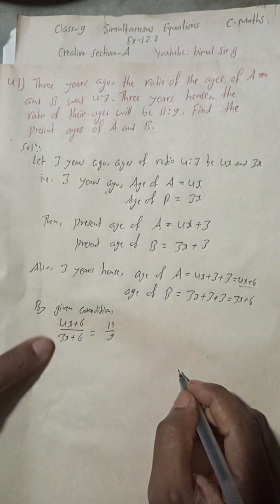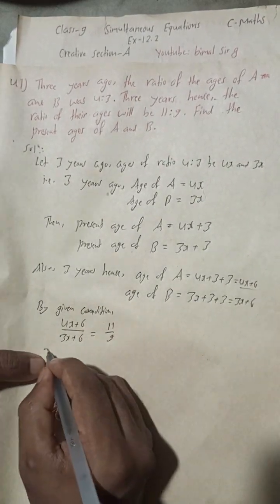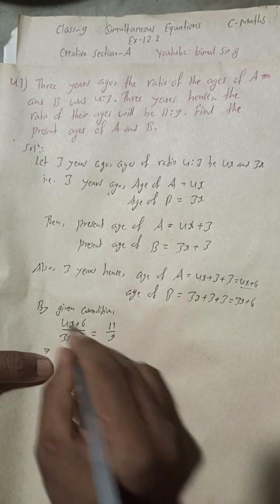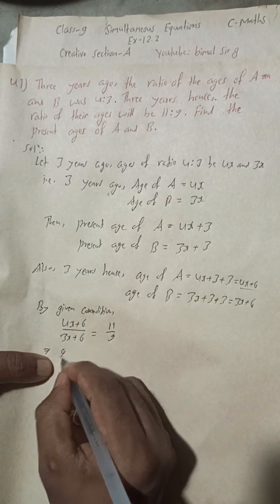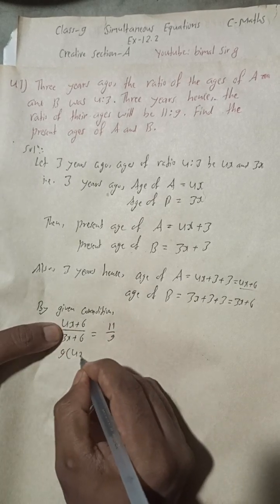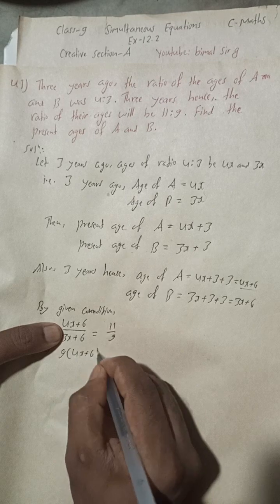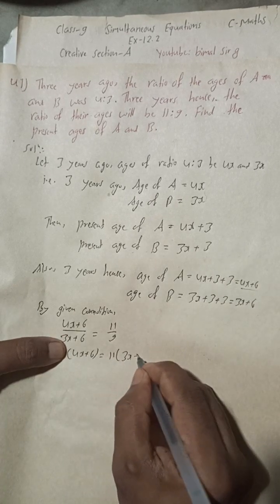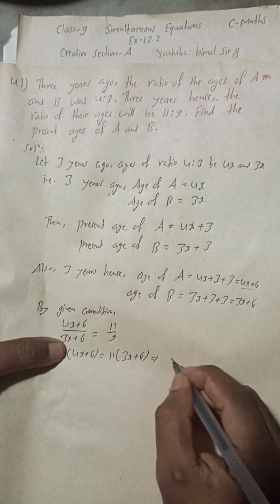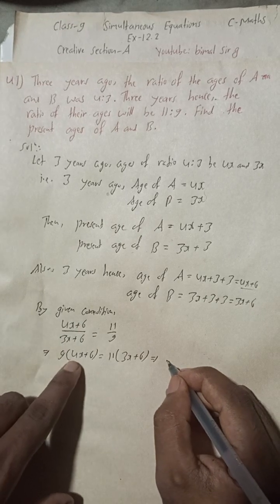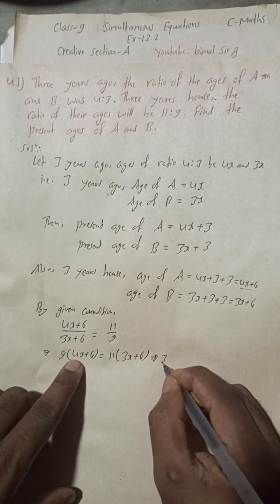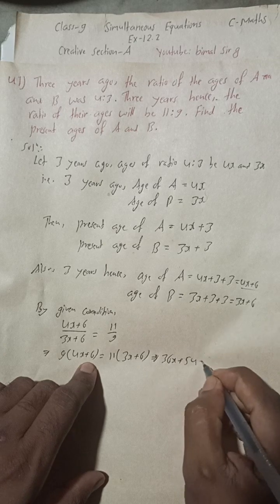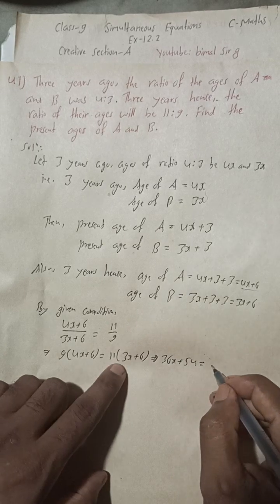Now cross multiplying: 9 into (4X + 6) is equal to 11 into (3X + 6). This gives 36X + 54 equals 33X plus 66.